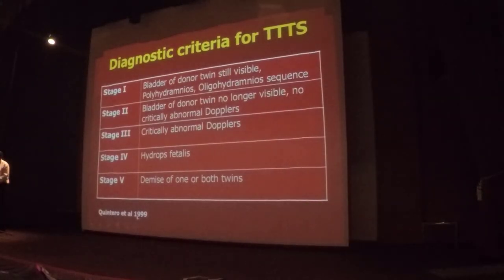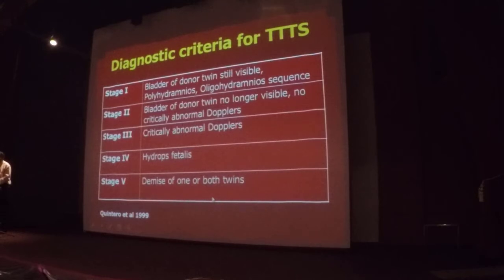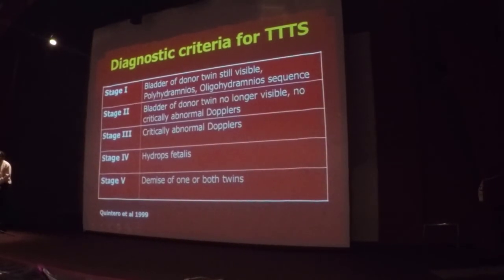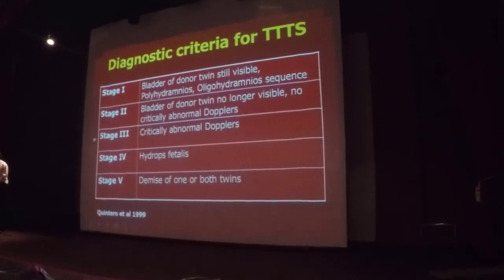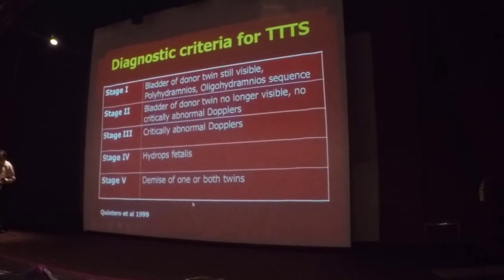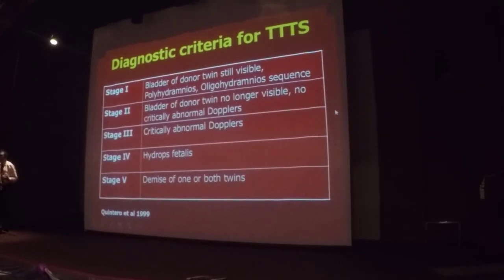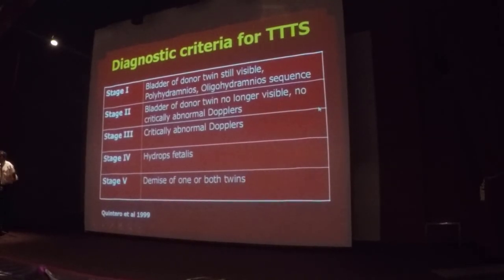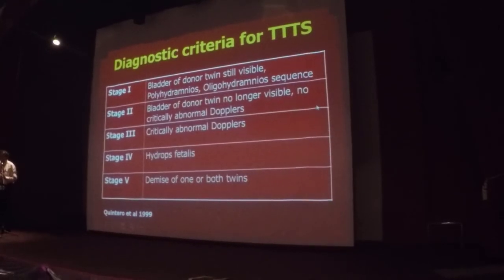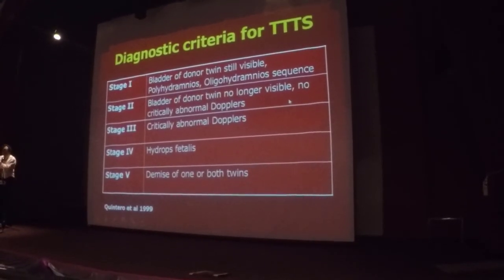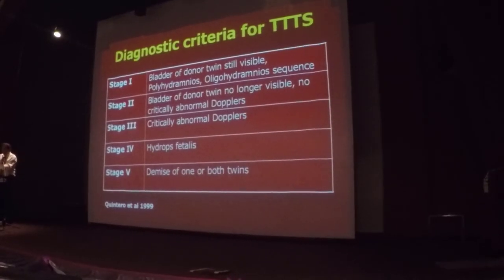When you do a scan, you will recognize one side has a lot of fluid with the recipient fetus's bladder always full, while the other donor fetus is much smaller and pushed to the edge. TTTS is diagnosed using the Quintero staging classification — stages 1 to 5. By stage 3, there are already abnormal Dopplers. You should recognize it before stage 3. By stages 1–2, we can already do laser photocoagulation to equalize blood flow between both fetuses. We usually send to HRPB as they have the facilities.